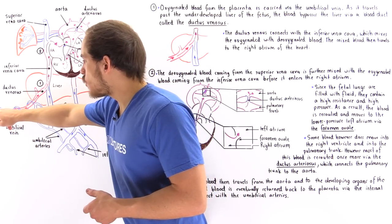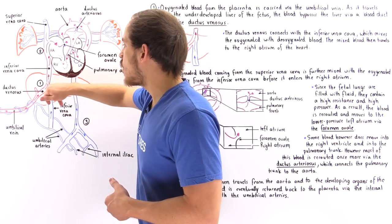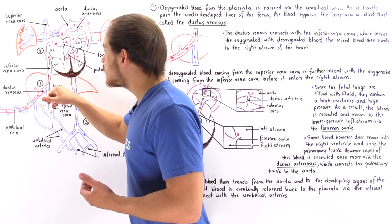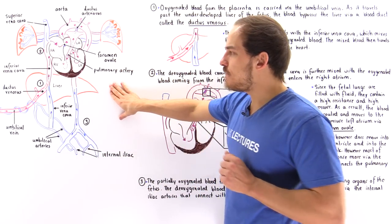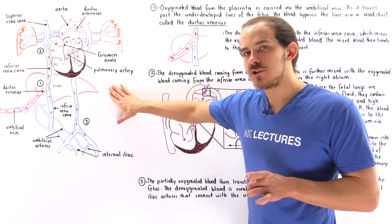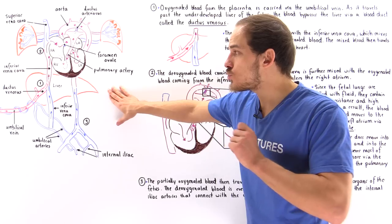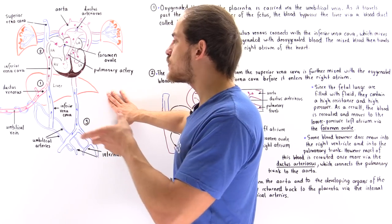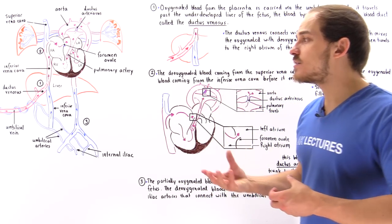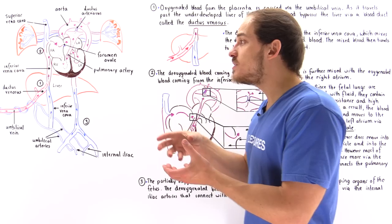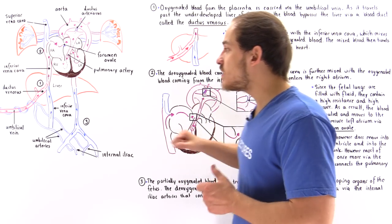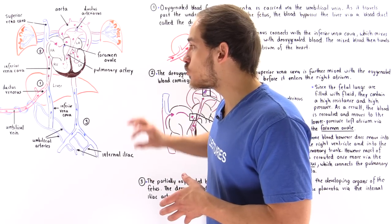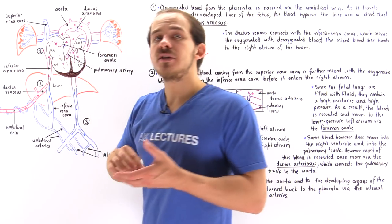As the umbilical vein, shown in red, carries the oxygenated and nutrient-filled blood to the heart, it eventually comes in close proximity with the liver. There is a tiny blood vessel that goes into that liver. The problem with the liver in the fetus is that it is underdeveloped — it is not fully functional. So we should not waste oxygen and nutrients on the liver. The fetal circulatory system conserves oxygen and nutrients by shunting blood away from the liver and directly into the inferior vena cava via a special duct known as the ductus venosus.